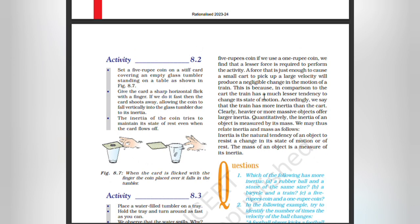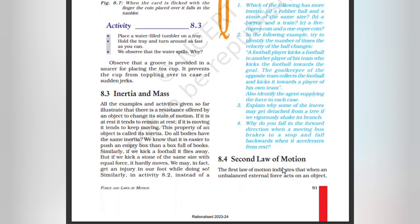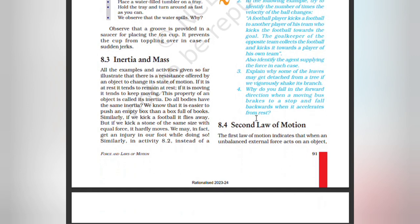A force that is just enough to cause a small cart to pick up a large velocity will produce a negligible change in the motion of a train. This is because in comparison to the cart, the train has a much greater mass to change its state of motion. Accordingly, we say that the train has more inertia than the cart. Clearly, heavier or more massive objects offer larger inertia. Quantitatively, the inertia of an object is measured by its mass. We may thus relate inertia and mass as follows: inertia is the natural tendency of an object to resist a change in its state of motion or rest; mass of an object is a measure of its inertia.